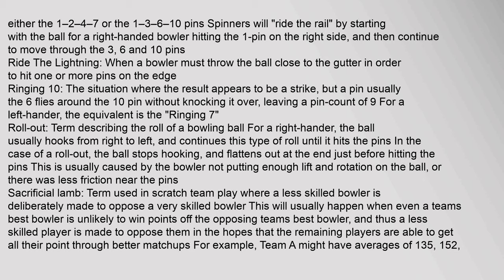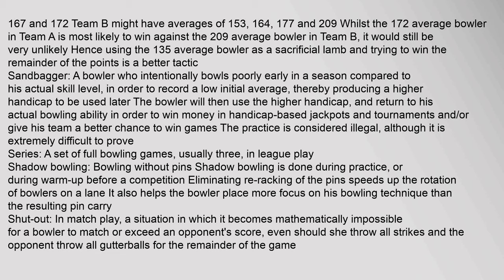Sacrificial lamb: a term used in scratch team play where a less skilled bowler is deliberately made to oppose a very skilled bowler. This happens when even a team's best bowler is unlikely to win points off the opposing team's best bowler, so a less skilled player is used in the hopes that remaining players win through better matchups. For example, team A with averages of 135, 152, 167, and 172 versus team B with averages of 153, 164, 177, and 209 — using the 135-average bowler as sacrificial lamb is the better tactic.